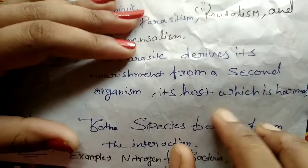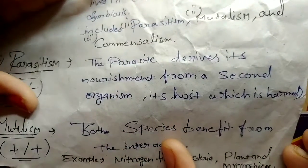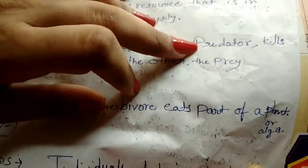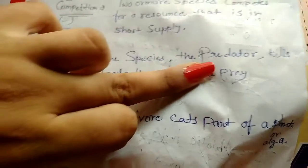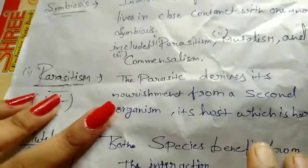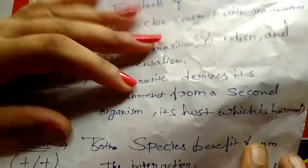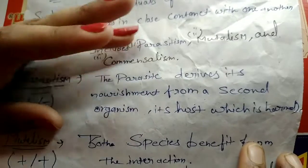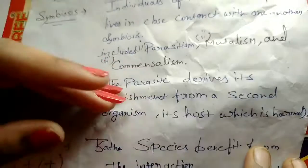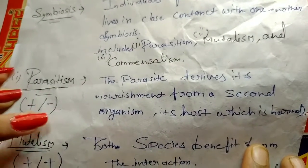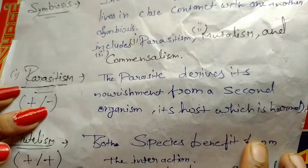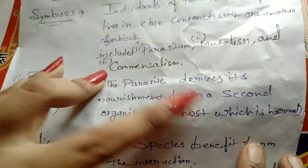Mostly the size of the parasite is smaller than the host. That is called parasitism. The difference between a host and prey is that in predation, the predator kills and eats the prey. But in parasitism, the parasite derives nourishment from the host without immediately killing it. The host is larger than the parasite. This is a plus and minus interaction because the parasite benefits while the host is harmed.